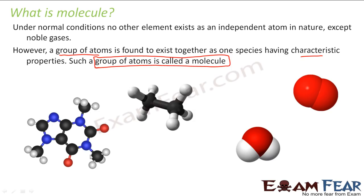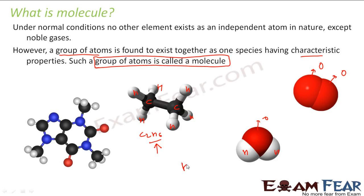For example, here is an ethane molecule which is formed by two carbon atoms and six hydrogen atoms. This is a water molecule — with one oxygen and two hydrogen atoms. Similarly, this is an O2 molecule which has two oxygen atoms. So these are molecules — groups of atoms combined together.